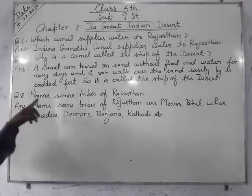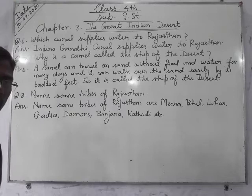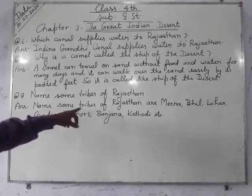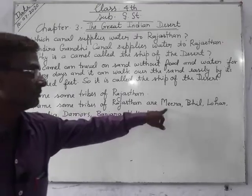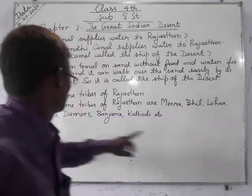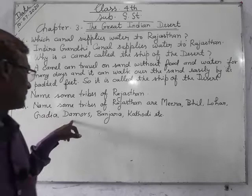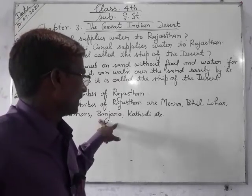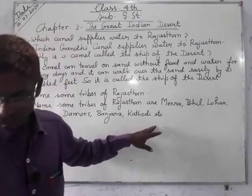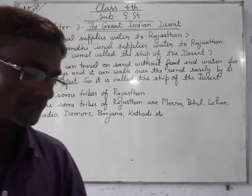Question eight: Name some tribes of Rajasthan. The names of tribes of Rajasthan are Meera, Bhil, Lohar, Gaudiya, Daimors, Banjara, Kaithodi, and others. In this way, these lessons are totally finished.